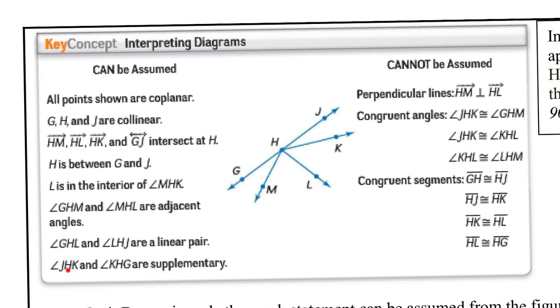And speaking of supplementary angles, JHK and KHG would be supplementary because it's just two angles. Do they add up to form a straight line? Yes, they do.